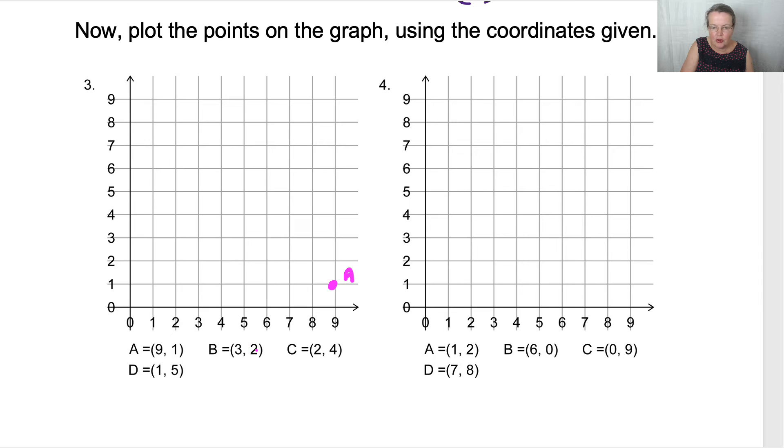B is three, two. So across three and up one, two. So that's B. C is across two and up one, two, three, four. So what was that? C. And D is across one and up five. And that was D.